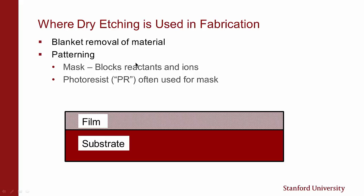Where is dry etching used in fabrication? First, it's used for removing blanket layers — for example, removing resist in-process or other films. Second, and most importantly, it's used for patterning. In patterning, we use a mask to block the reaction and ions so that we can duplicate a copy of the mask pattern in the material on the surface of our wafer. Usually the mask is a photoresist, so let me show a diagram of how this works.